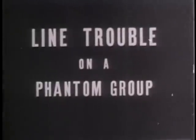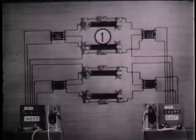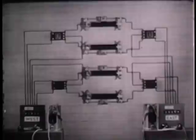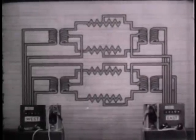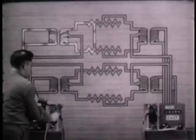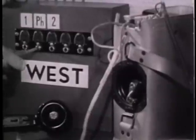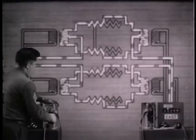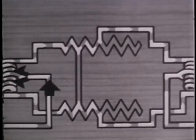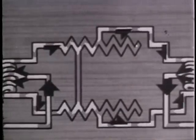Now for some typical examples showing the effect of line trouble on a phantom group. This phantom group consists of three telephone circuits. Here, telephone ringing and voice currents act alike, so we will confine our demonstration to ringing current only. If one of the side circuits is accidentally shorted, its reaction is the same as a shorted simplex. The ringing current of the faulty circuit never reaches its destination. When we ring on the phantom, however, we can see that it is unaffected, because the two halves of the phantom current are traveling in the same direction. When they reach the short, they buck each other and no current flows through the short.